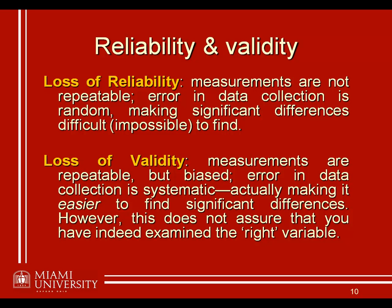When we have a loss of reliability, when our measurements are inconsistent or unreliable, that means our measurements are not repeatable. In terms of the measurement error we opened this lecture series with, that means our error in data collection is random — the second type of error, random or unsystematic error — and that is going to make significant differences difficult or impossible to find.